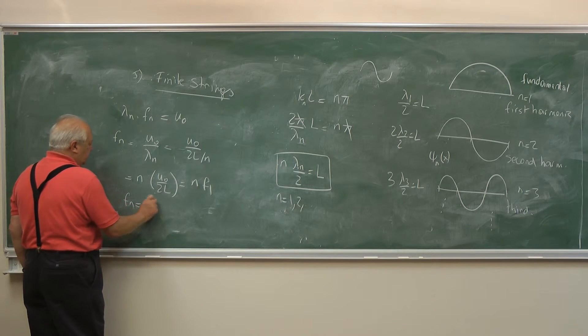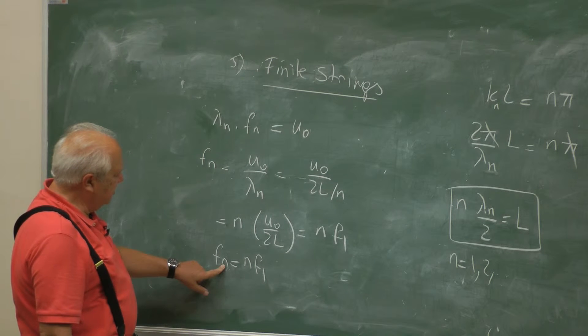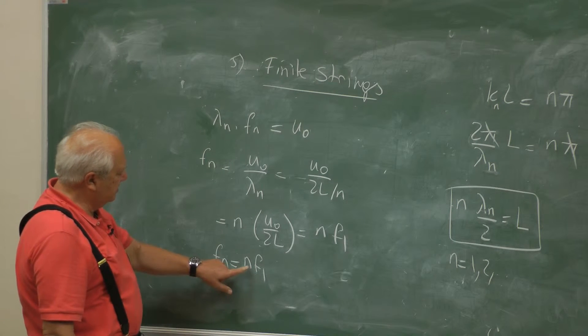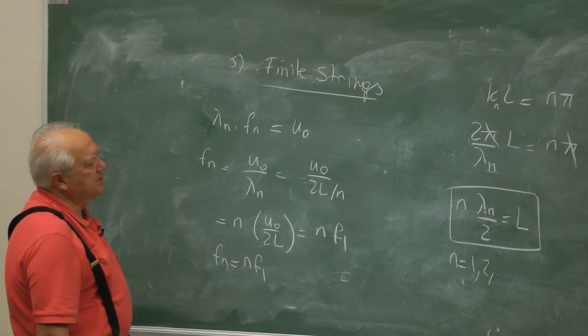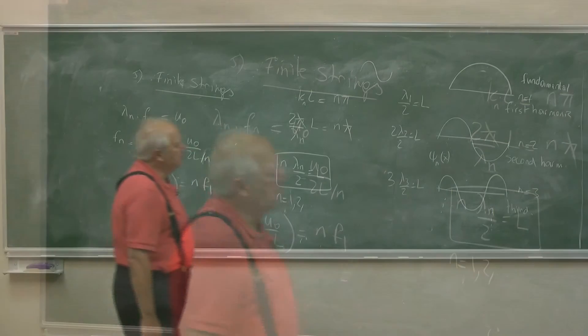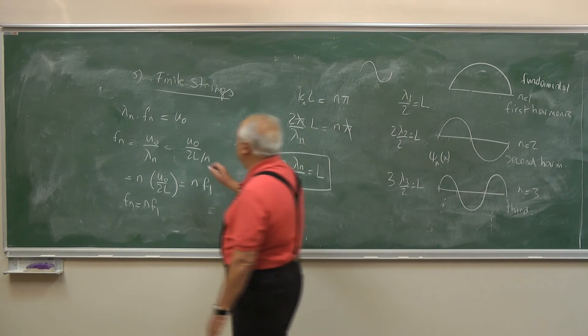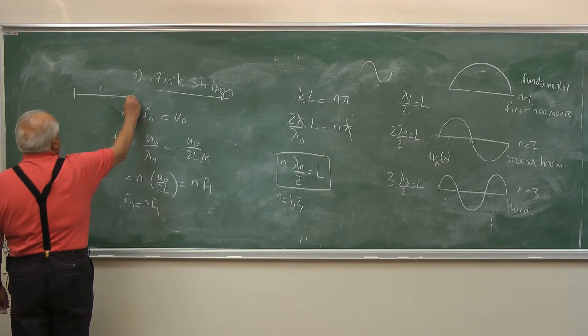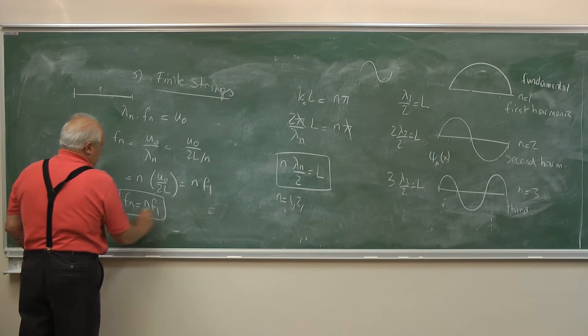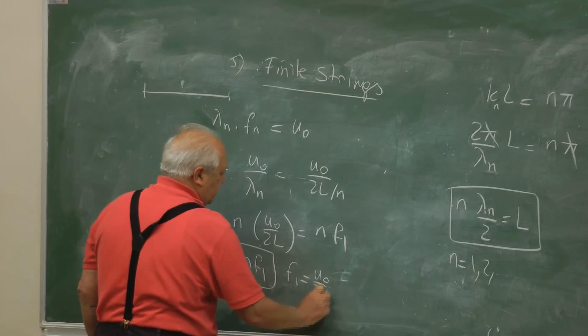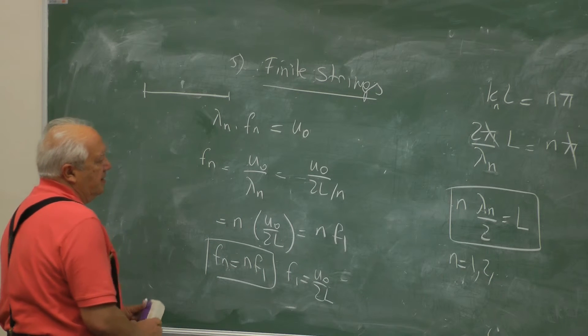When fₙ equals, when the nth harmonic frequency is related to the fundamental in this fashion, it's called the harmonic series. So these are the normal modes of a finite string from 0 to L. So this is the frequency, and the fundamental frequency is u₀/2L.